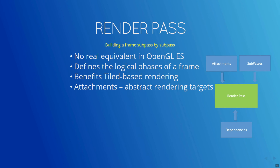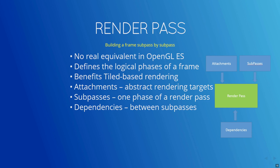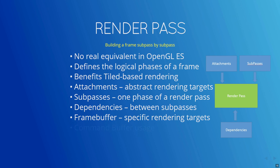You need to define the attachments — the render targets — and describe how they'll be initialized. Then, for each sub-pass, you will need to describe which attachments are used for input, which ones for drawing to, and which ones for use as a depth buffer and resolving to. There are also dependencies which describe how the sub-passes depend on each other. Render passes describe how the rendering should occur but don't reference any specific render targets. Frame buffers are a specific set of render targets and views that are compatible with a render pass. You'll use both a render pass and a frame buffer when building a command buffer. There are commands to begin a render pass, transition to the next sub-pass, and to end a render pass.